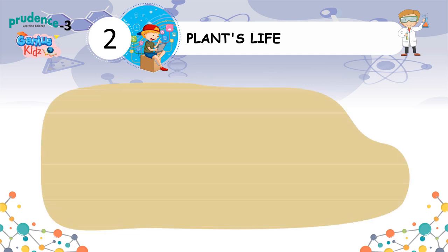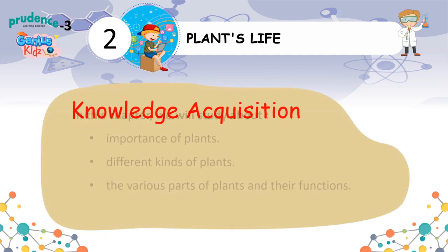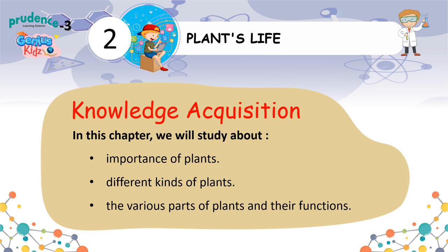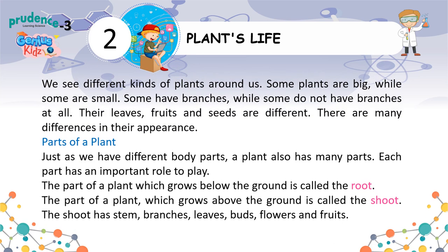Plants — Life Knowledge Acquisition. In this chapter, we will study about the importance of plants, different kinds of plants. We see different kinds of plants around us. Some plants are big, while some are small. Some have branches, while some do not have branches at all. Their leaves, fruits and seeds are different. There are many differences in their appearance.